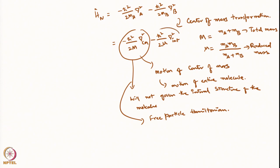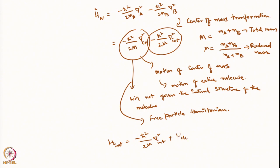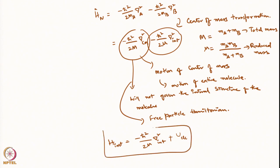What remains is H_internal = -ℏ²/2μ · ∇²_internal. For the rotational problem this was sufficient, but for the vibrational problem we must add U_electronic, because the electrons provide the potential energy in which the nuclei vibrate. The electronic energy — which includes electron-electron repulsion, electron-nuclear attraction, and nuclear-nuclear repulsion — provides this potential.